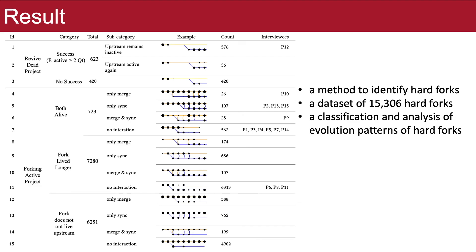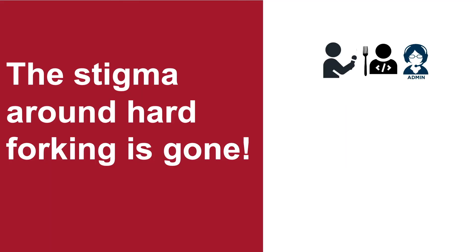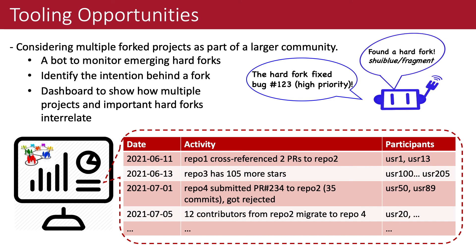Finally, we identified, studied, and classified 15,000 hard forks. The takeaway message is that hard forking is still a rare phenomenon. The interview results show that the perception of forking has significantly changed compared to perceptions reported in earlier work. We also suggested tooling ideas to consider multiple forked projects as part of a larger community. If you are interested in the details of our study, please read our paper or watch the full paper presentation in the technical paper track on July 11th.